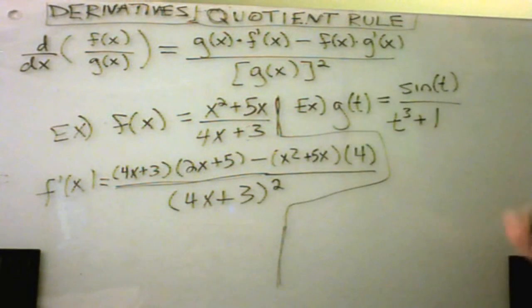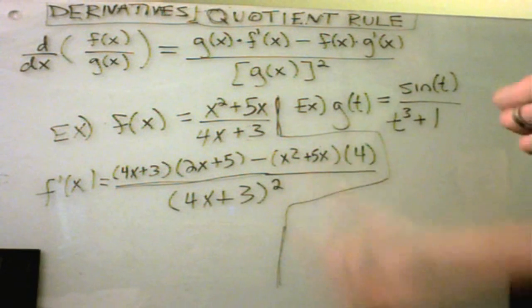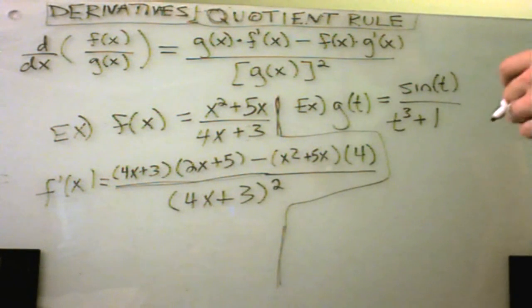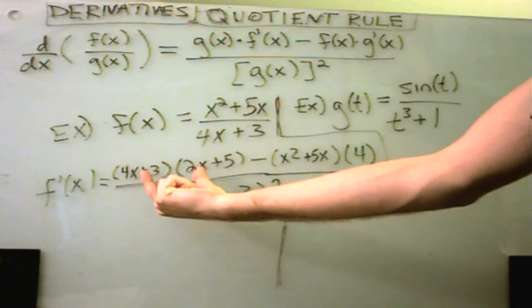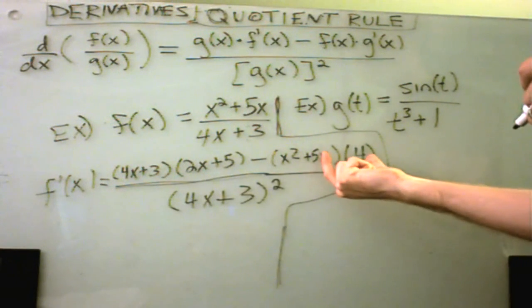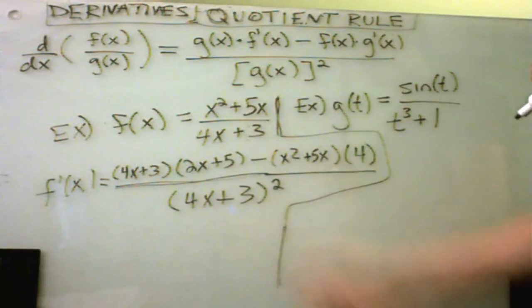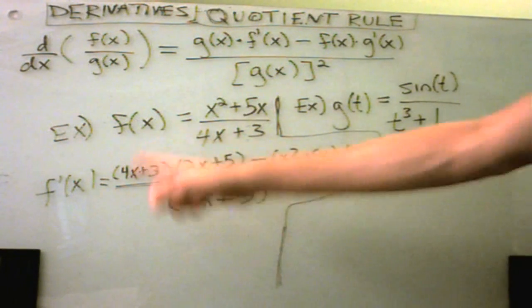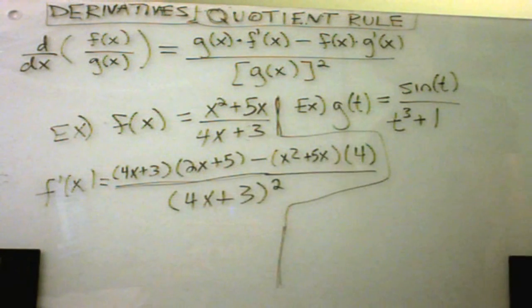So, obviously, you could do some algebraic simplification to this problem now. You could, for example, distribute out this term, distribute out this term, collect like terms, and just try to grind some of this down. Usually, in a lot of classes, though, they'll just have you take the derivative and stop there. But there's definitely going to be some cases where you will want to simplify this down. But, for now, we'll just leave it at that and be satisfied.